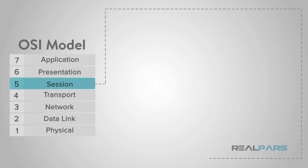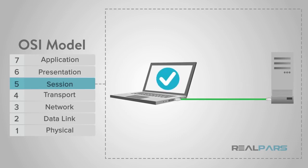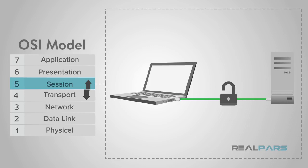At the session layer, or layer 5, the construction, direction, and conclusion of connections between devices occur. This layer supports multiple types of connections, as well as being responsible for authentication and reconnection if a network interruption should occur. After the session is established, the data then passes to or from the transport layer.